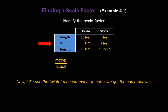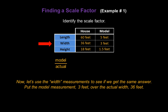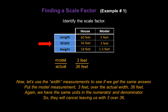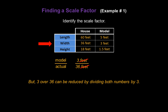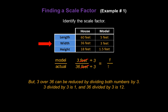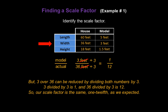Now let's use the width measurements and see if we get the same answer. Put the model measurement, 3 feet, over the actual width of 36 feet. Again, the units cancel, leaving us with 3 over 36. We can reduce by dividing both numbers by 3: 3 divided by 3 gives us 1, and 36 divided by 3 gives us 12. So our scale factor is the same — 1/12 — as we expected.